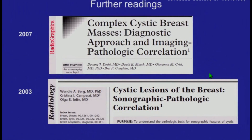Finishing this topic, I can recommend two further references about complex cystic breast masses: a diagnostic approach and imaging-pathologic correlation on one hand, and from Wendy Burke, 'The cystic lesions of the breast: sonographic-pathologic correlation.' Thank you for your attention.